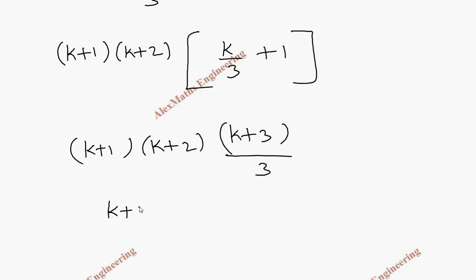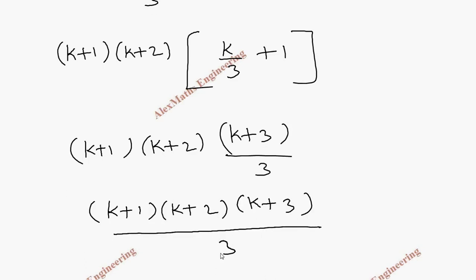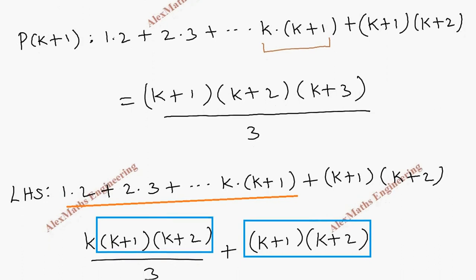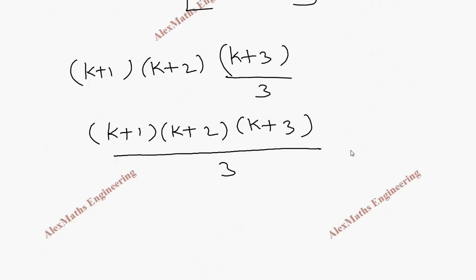So the total term is (k+1)(k+2)(k+3) / 3, which is exactly the RHS we wrote for the P(k+1) expression. Since LHS equals RHS, we can say P(k+1) is true. Therefore by the principle of mathematical induction, P(n) is true for all natural numbers n.